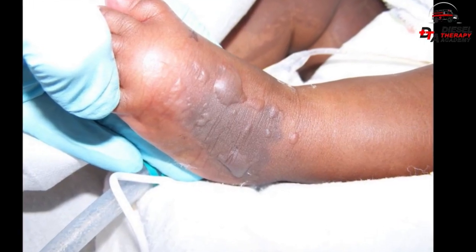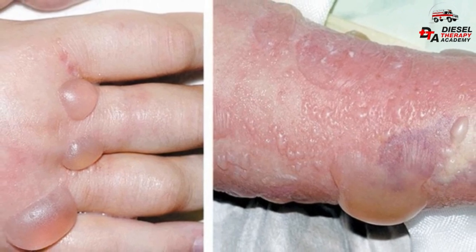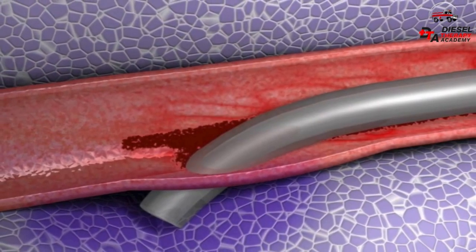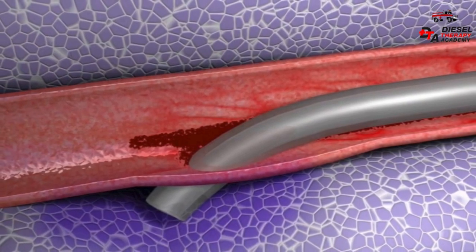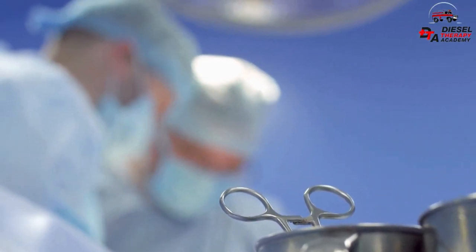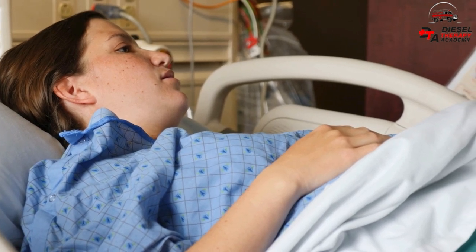If the fluid is a non-vesicant that does not irritate tissue, it is called an infiltration. If the fluid is a vesicant that irritates tissue, it is called an extravasation. Left untreated, IV infiltration can lead to excessive fluid in one or more compartments of the arm, causing damage to nerves, arteries, and muscles, typically requiring surgery to prevent permanent loss of function and possible amputation. Significant signs of infiltration and extravasation include swelling at or near the IV site, skin that feels tight and cool to the touch, intense pain or burning or slight discomfort, skin discoloration, numbness, and impaired blood circulation. The symptoms a patient experiences often depend on the severity and length of the infiltration.